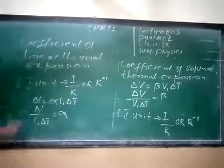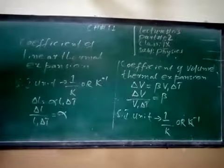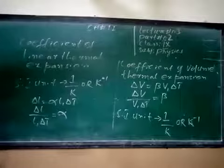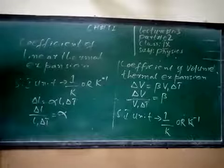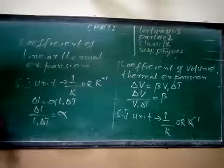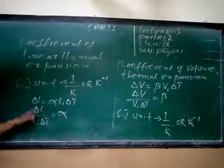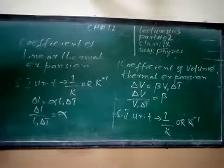Fractional means that delta L is divided by L1 — we divide the change by the original length. So the result will be fractional. And per degree means change in length per degree rise in temperature. The fractional change in length per degree rise in temperature is called the coefficient of linear thermal expansion.